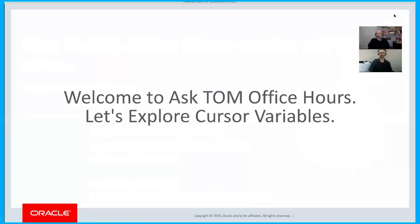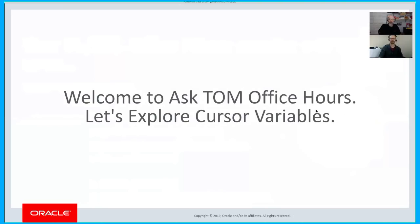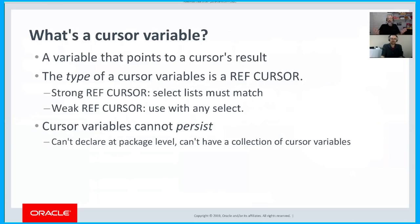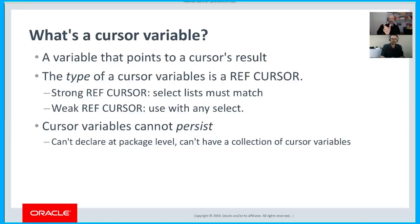We're going to focus on exploring cursor variables. A cursor variable is a variable that points to a cursor's result set. There are two types: a strong ref cursor, where the select list in your select statement must match the definition in the ref cursor declaration, and a weak ref cursor, which you can use with any select you want — generally for dynamic SQL.